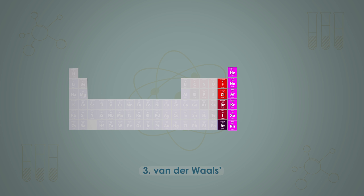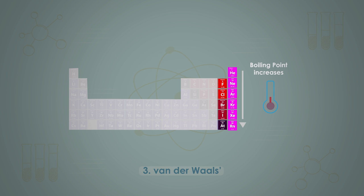Van der Waals forces are the only intermolecular forces between non-polar molecules such as the halogens and the noble gases. As the number of electrons in the molecule increases, so do the Van der Waals forces. This explains why there is an increase in boiling point as we go down the group of halogens and down the group of noble gases.